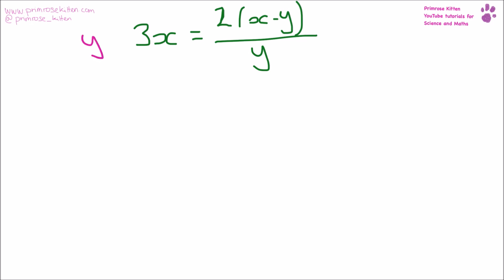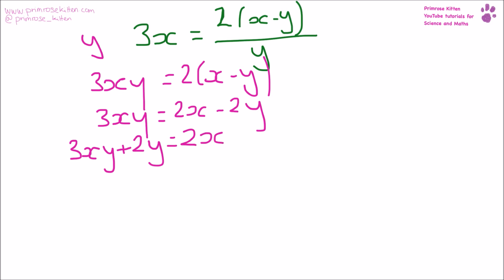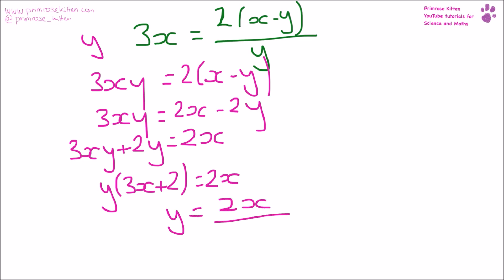Here we want to make y the subject of the formula. We have y at the bottom, so we need to times that up first of all. Multiply out the brackets and put everything with y over on one side of the equation: 3xy + 2y = 2x. Now we have two things times by y, so we take y outside: y(3x + 2) = 2x. Now we have y times by something, so we divide: y = 2x over (3x + 2).